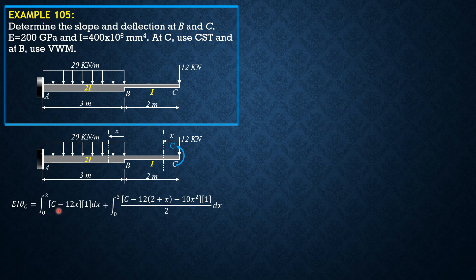So prior to integration we set C is 0. So integral of negative 12x times 1 dx is negative 24. This one C is 0. So negative 12x times 1 over 2, 0 to 3 is negative 108.